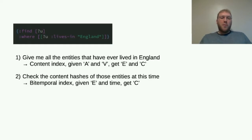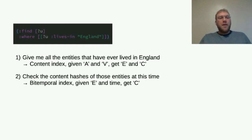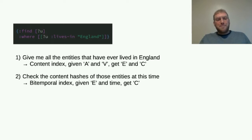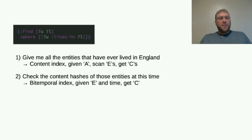In practice, on the assumption that you only often query more than one attribute from a document at any one time, this means we only need to do the bitemporal resolve once. So let's say we have a query looking for all users living in England. We first go to the content indices — we have an index that will efficiently tell us all entities that have ever lived in England and their content hashes. Then we check the bitemporal indices: did that entity have that content hash at the time we're querying for? If so, we have a match.